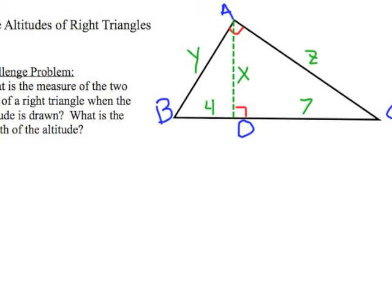All right, first of all let's solve for X. Now you remember that the altitude is the geometric mean between the two parts of the hypotenuse that are formed. So X goes in those two places in my proportion and 4 goes in one place and 7 goes in the other.